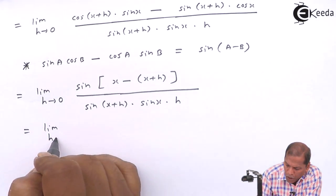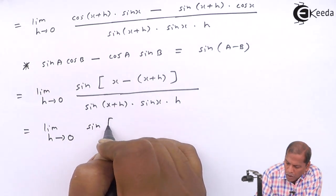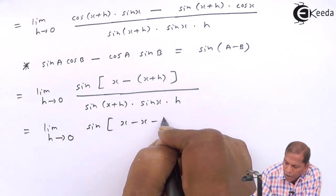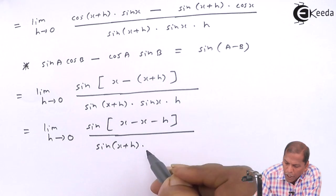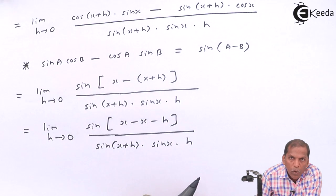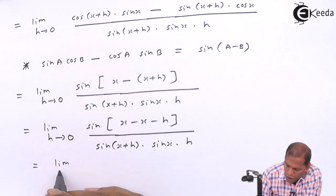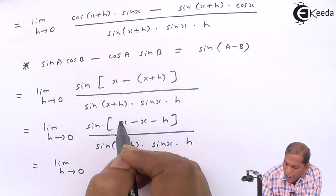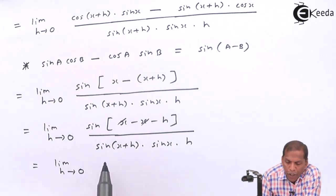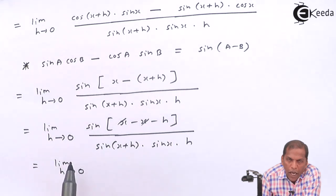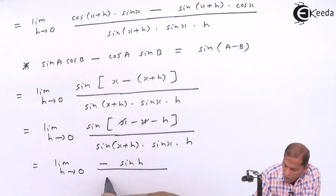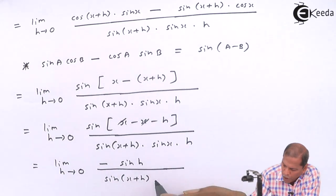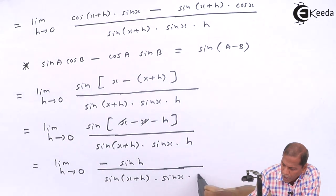That equals limit h tends to 0, sin(X minus X minus H), bracket complete, whole thing divided by sin(X+H) into sin(X) into H. On further simplifying, we get limit h tends to 0. Now, in the bracket, plus X and minus X cancel, so we are left with sin(minus H). By applying the trig formula that sin(minus θ) is equal to minus sin(θ), here we can write minus sin(H) upon sin(X+H) into sin(X) into H.